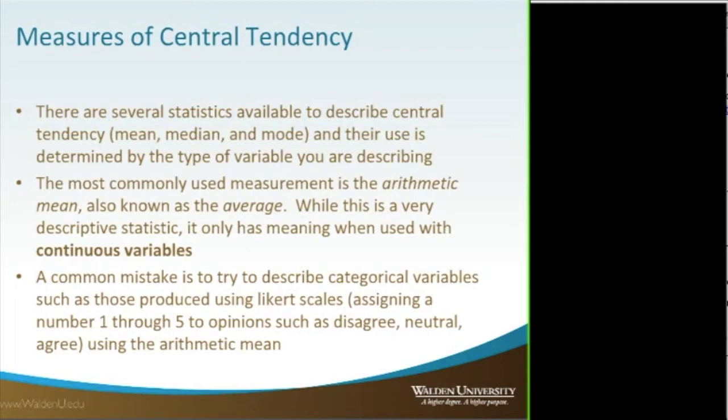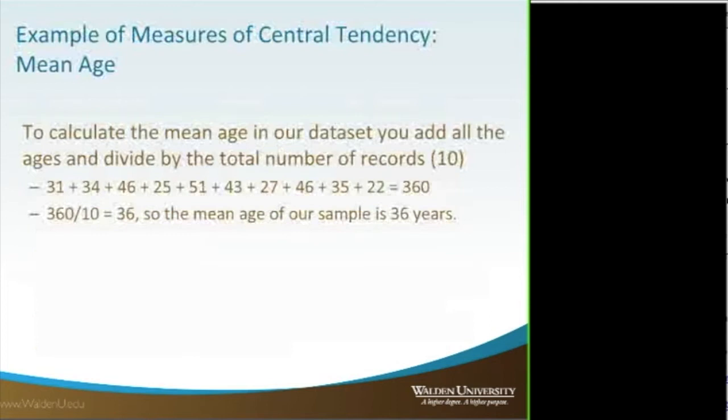We use mean and average as the same meaning, and those are designed for continuous variables. You have to be very careful if your data set is coded — if you have ethnicity coded as one for white, two for black, three for Hispanic, or gender as one for male and two for female. You wouldn't want to run a mean and standard deviation of that, as it wouldn't give you any valuable information. In that case, you would want to run a frequency table or do a graph or a chart.